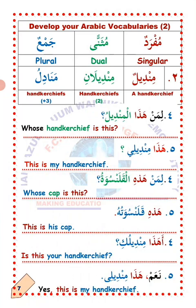Mufrad — singular; Muthanna — dual; Jamu — plural. Mindil — one handkerchief; mindilan — two handkerchiefs; manadil — more than two handkerchiefs from third upward. Now we are going to learn how to make use of those words in a meaningful sentence.